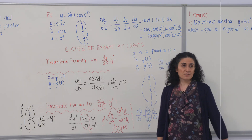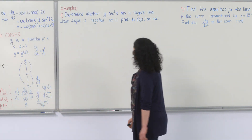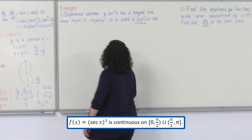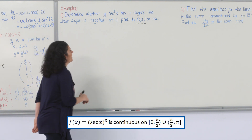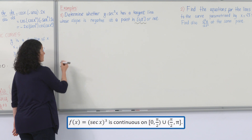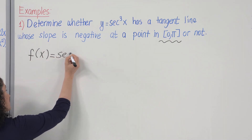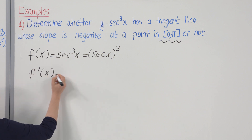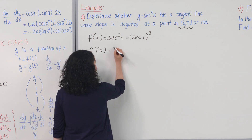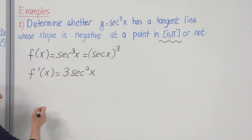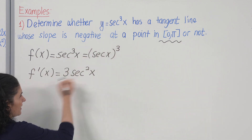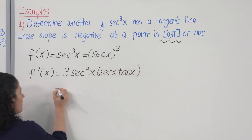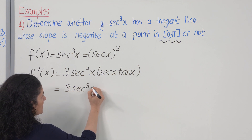Example: Determine whether sec³(x) has a tangent line with negative slope at a point in the given interval. We apply the chain rule to find the derivative of sec³(x). The derivative is 3 sec²(x) — evaluating the outer cube function at the inside — times the derivative of sec(x), which is sec(x)·tan(x). So we have 3 sec³(x) · tan(x).